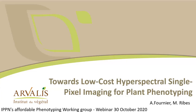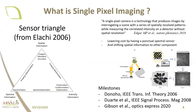I will present the work around low-cost hyperspectral single pixel imaging developed in our group composed of people from Arvalis and Photonics Bretagne. First of all, what is single pixel imagery? Single pixel imagery is one solution to solve the old dilemma of a sensor designer — the triangle of the sensor — where you have to choose between the quality and quantity of spatial information, spectral information, and intensity information.